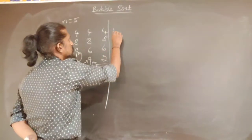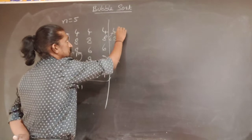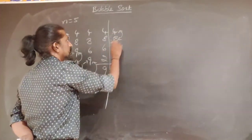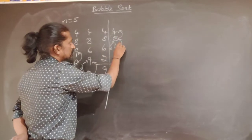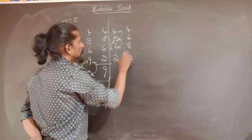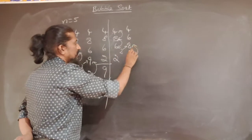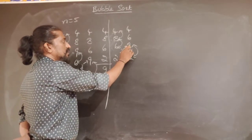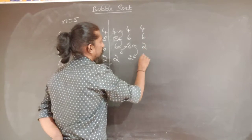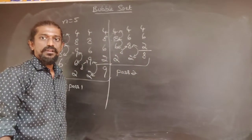In the second pass we consider the first four elements. Comparing first and second, they are in order — no swap. Moving to second and third, they are out of order — we swap: 4, 6, 8, 2. Moving to third and fourth, the third element is greater than the fourth — we swap: 4, 6, 2, 8. This completes the second pass; the second largest element has gone to its final sorted position.